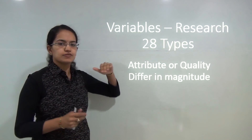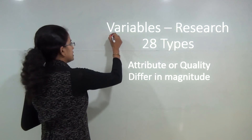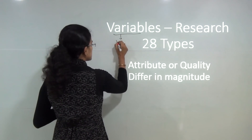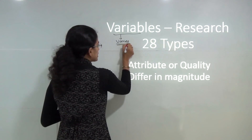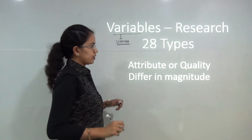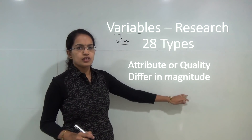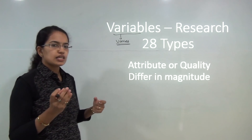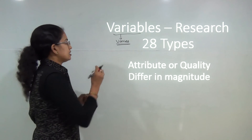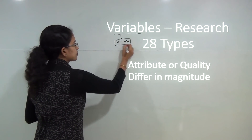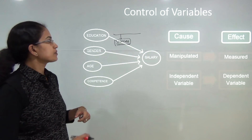Starting with what is a variable? Variable, as the name suggests, means that it varies. Now in what respect does it vary? It can differ in magnitude. So it is basically an attribute or a quality that could differ in magnitude, and we call it as a variable.